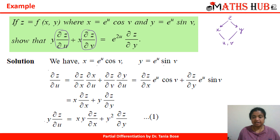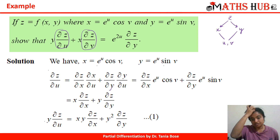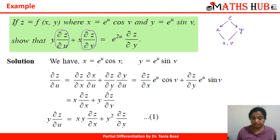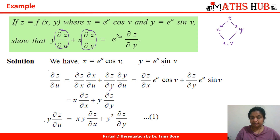By the chain rule: ∂z/∂u = (∂z/∂x)(∂x/∂u) + (∂z/∂y)(∂y/∂u). Since z is not explicitly given, we keep ∂z/∂x and ∂z/∂y as they are. Now ∂x/∂u = e^u·cos(v) = x and ∂y/∂u = e^u·sin(v) = y. So ∂z/∂u = x·(∂z/∂x) + y·(∂z/∂y). Multiplying the whole expression by y, we get y·(∂z/∂u) = xy·(∂z/∂x) + y²·(∂z/∂y).